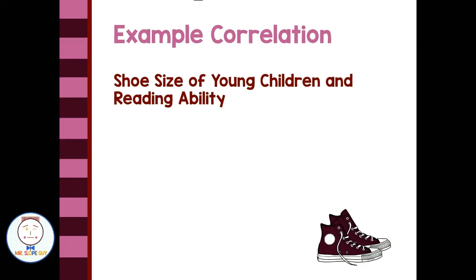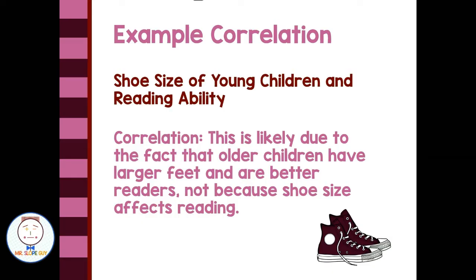Shoe size of young children and reading ability would be a great example of correlation. This is likely due to the fact that older children have larger feet and are better readers, not because shoe size affects their reading. It just shows that as shoe size increases, you're getting older as a child and your reading ability is increasing at the same time — it doesn't mean larger shoe size is causing them to read better.